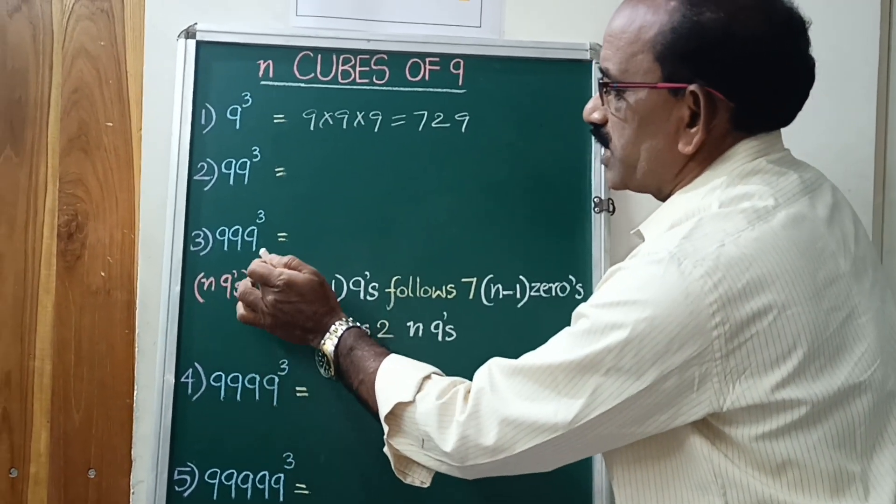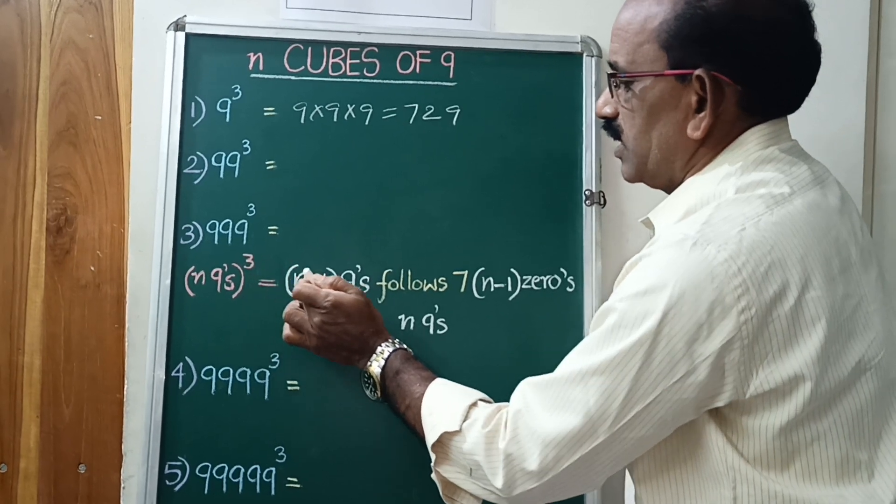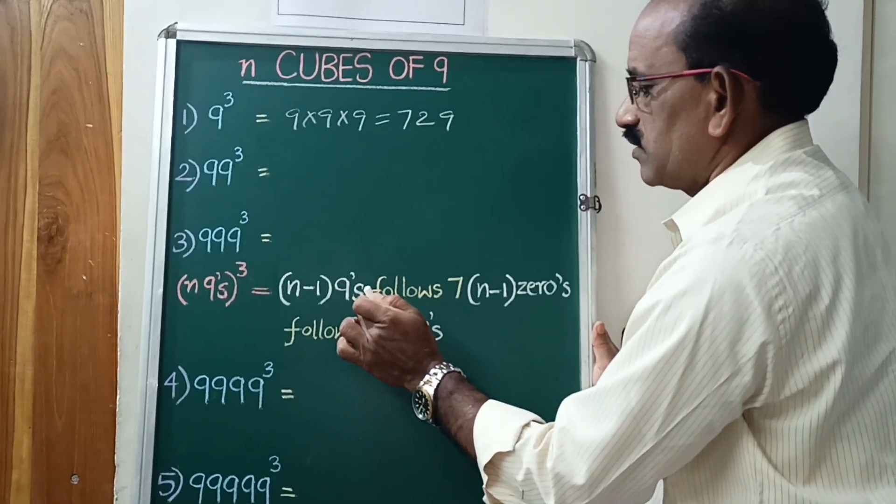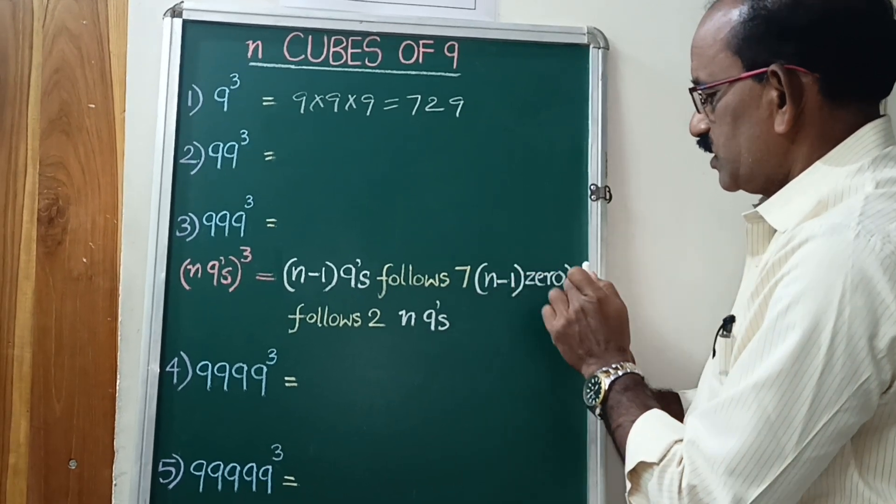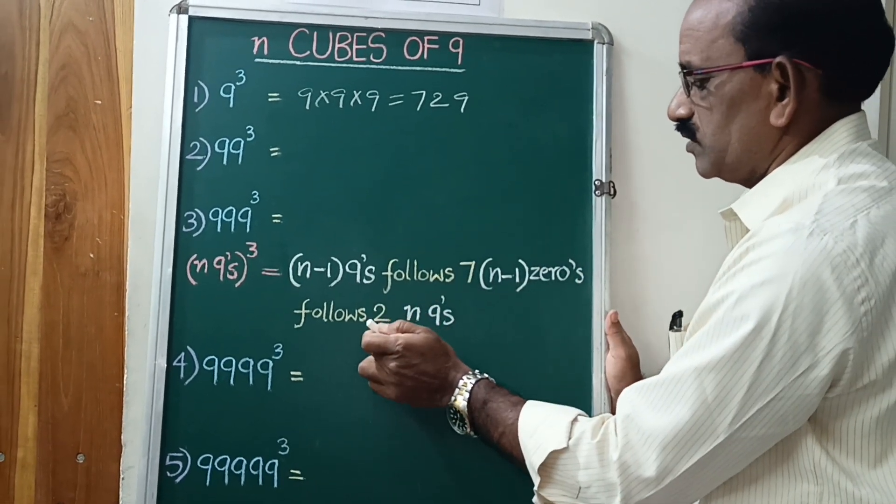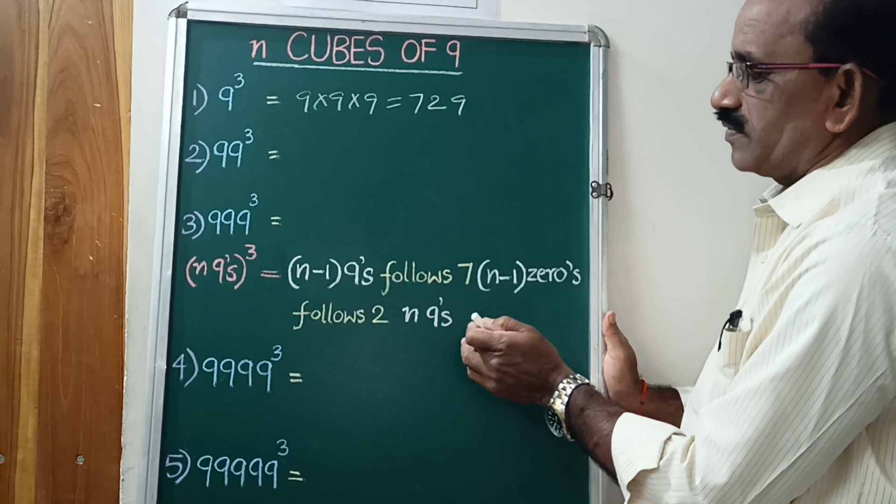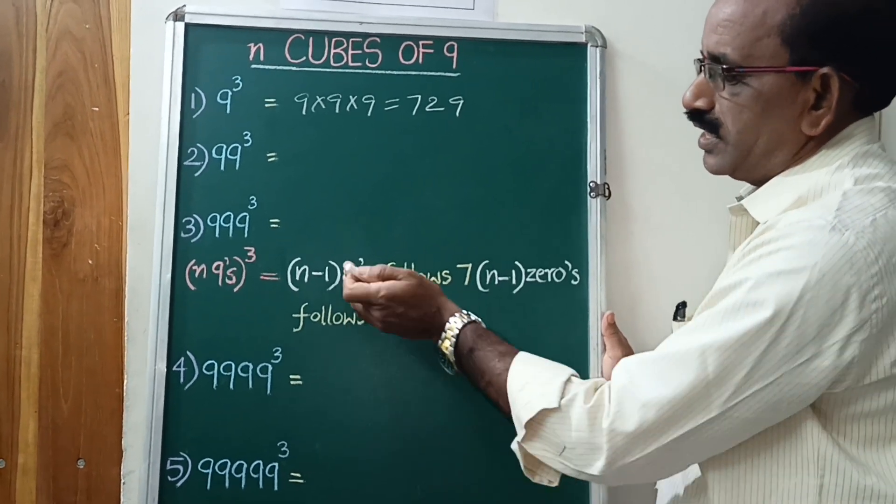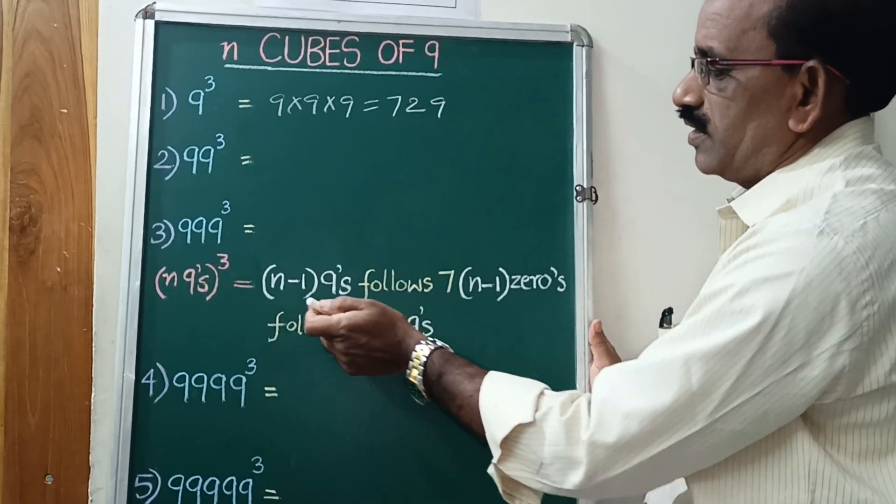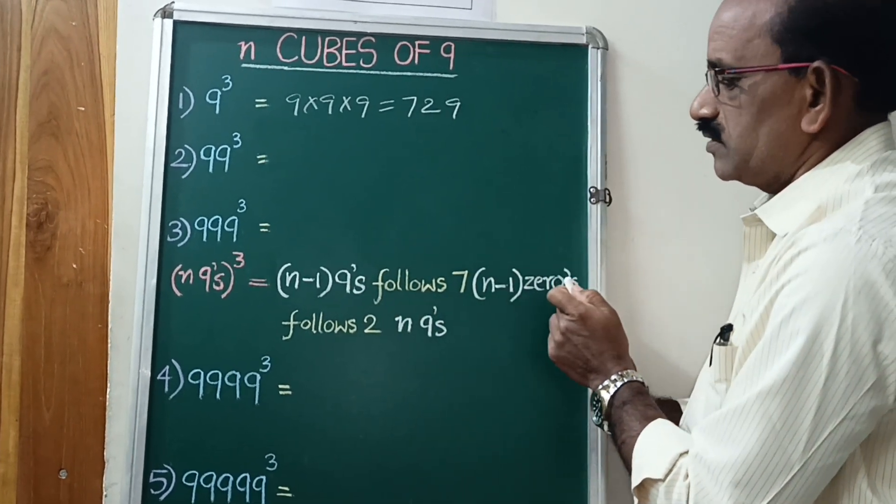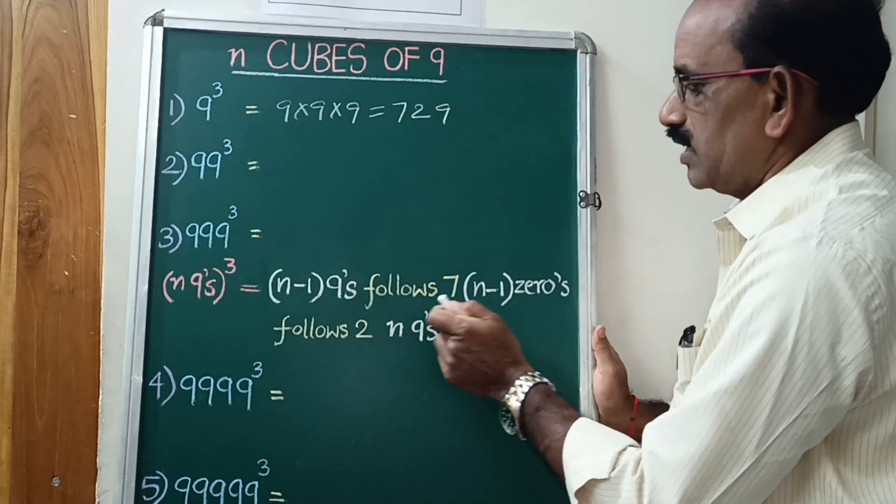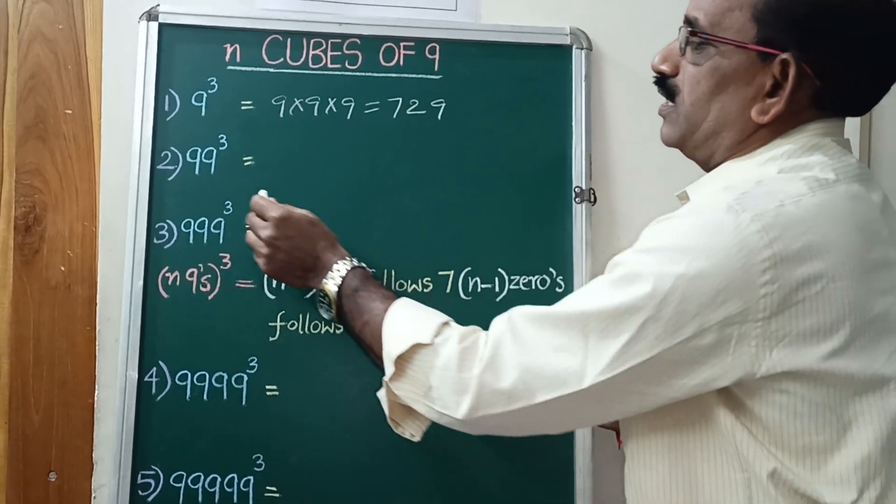N9 cube equal to N minus 1, 9's, next follows 7, N minus 1, 0's, follows 2, N 9's. Easy Maths by any 9's file: N minus 1, 9's, follows 7, N minus 1, 0's, follows 2, N 9's.